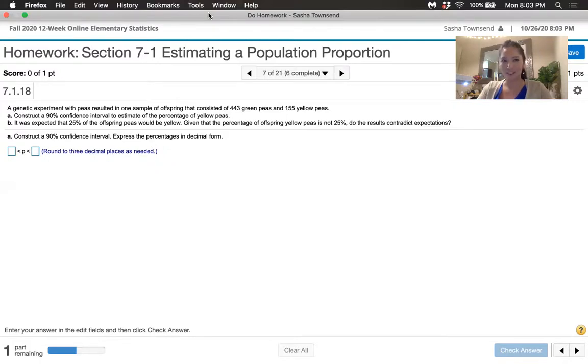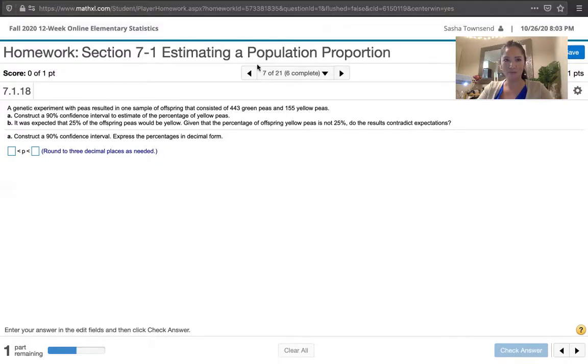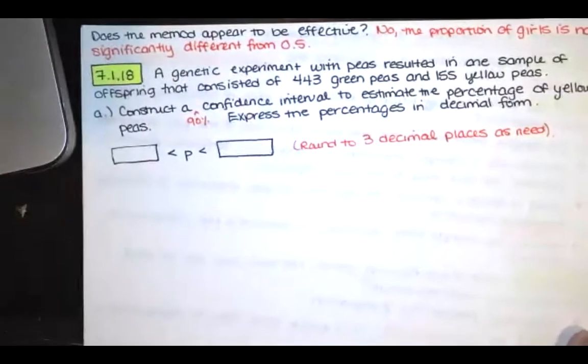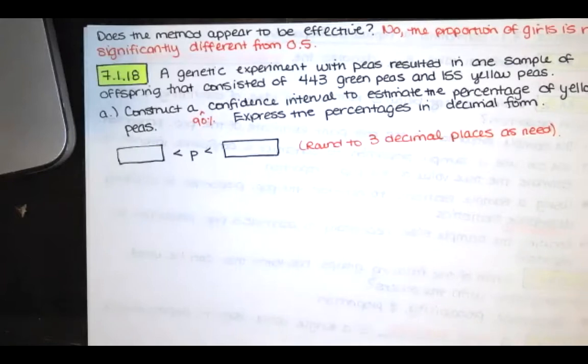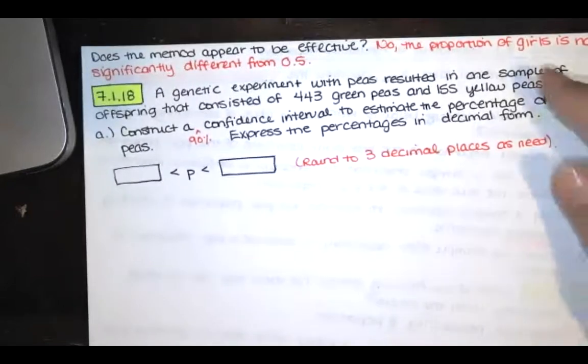To show you how to do this, I'm going to share my paper with you. The first thing that we should do anytime we are constructing a confidence interval is decide whether all of the requirements are met. The first requirement is that the sample is a simple random sample. Yes, this data is random.